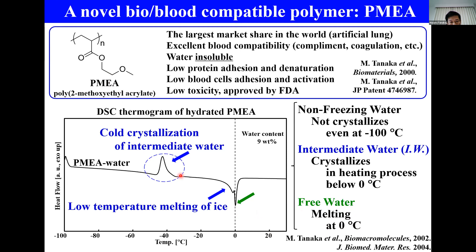In the case of the PMA-water system, you can see the cold crystallization of water peak at minus 40°C, very low temperature. And you can see the melting of ice below zero degrees C as well as at zero degrees C, similar to pure water. We define this type of water as free water because of melting of ice at zero degrees C. But this crystallization peak — hydrated water below zero degrees C and melting of ice below zero degrees C — we can categorize this type as intermediate water, because its behavior is different from conventional free water and non-freezing water. Non-freezing water is not crystallized even at minus 100°C. So we have categorized three types of hydrated water in polymers.